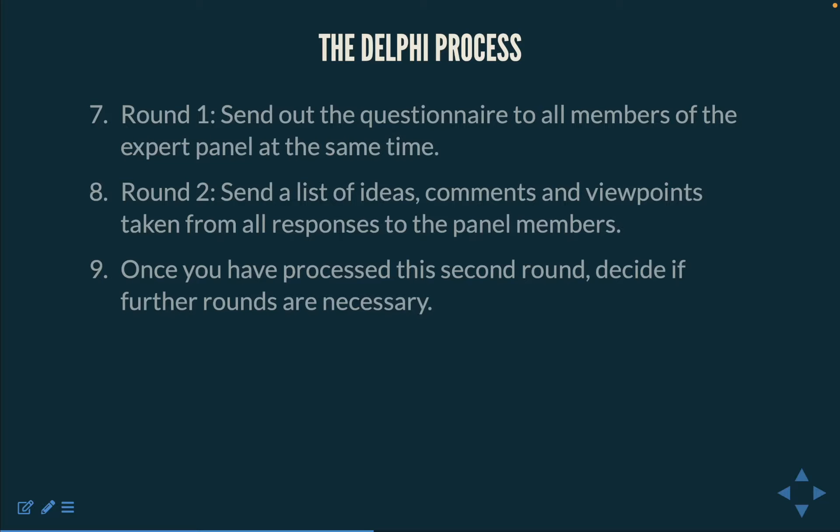Give an opportunity for panel members to make additional statements or comments. Once you have processed the second round, decide if further rounds are necessary. If consensus is reached as early as the second round, it is perfectly legitimate to stop there — though this is fairly unusual, and new comments are frequently added at this stage. The reaction from the panel when they receive their first feedback is usually to make additional comments, as reading the thoughts and ideas of others often triggers extended thinking on these issues.